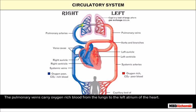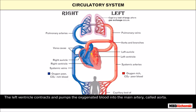The pulmonary veins carry oxygen-rich blood from the lungs to the left atrium of the heart. The left atrium contracts and pushes the oxygenated blood into the left ventricle. The left ventricle contracts and pumps the oxygenated blood into the main artery called the aorta.